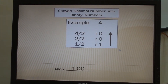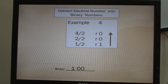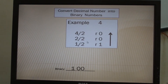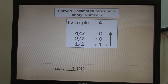How about the decimal number 4? Let us divide the number 4 by 2. 4 divided by 2 is 2, remainder 0. 2 divided by 2 is 1, remainder 0. 1 divided by 2 is 0.5, but instead you will write remainder 1. Write the answer from below to the top: 1, 0, 0. So the equivalent of decimal number 4 in binary is 100.